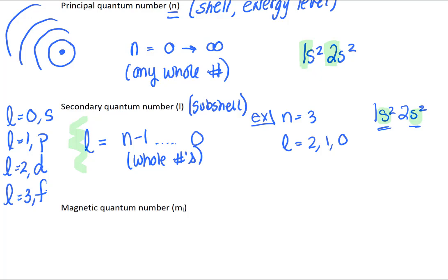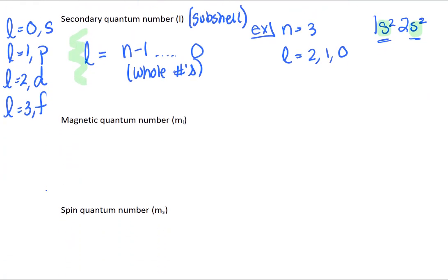So then let's look at the magnetic quantum number. For the magnetic quantum number, this is going to have values of negative l through the number line to zero, through the number line to positive l. So for example, if l equals two, then the m sub-l values are going to be negative two, negative one, zero, positive one, and positive two.